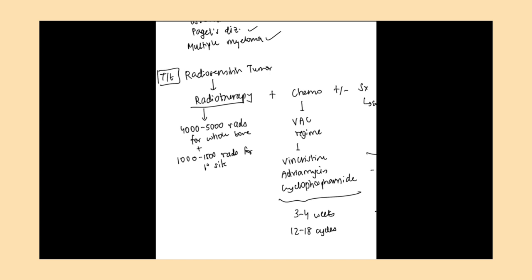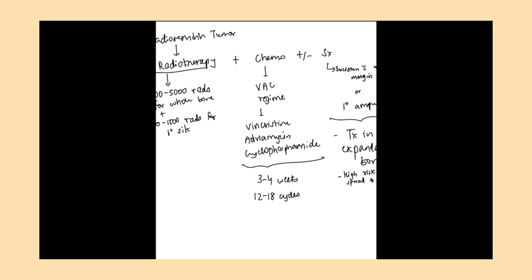In chemotherapy, VAC regime is followed. VAC stands for V for vincristine, A for adriamycin, and C for cyclophosphamide. This chemotherapy is to be given 3 to 4 weekly, with a total of 12 to 18 cycles.